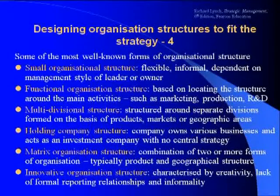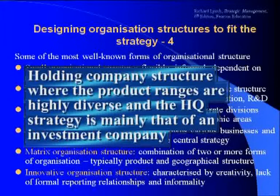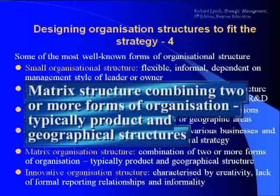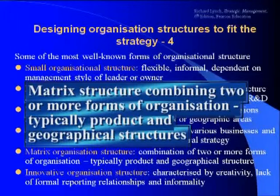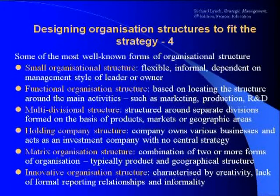As organisations become even more diverse in their product ranges, the headquarters may just become a holding company structure, and this is number five. An alternative form of structure for companies with several ranges of products is the matrix organisation, where joint responsibility is held between a product structure and some other organisational format, such as a functional or geographical structure. This type of organisation has some advantages, but it is difficult to manage the matrix structure successfully.